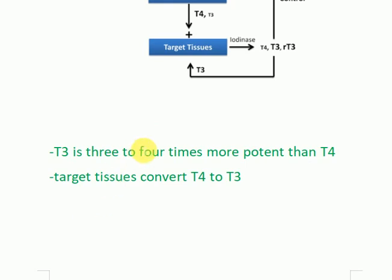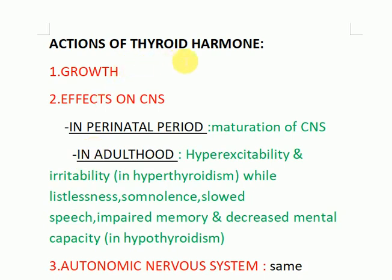T3 is three to four times more potent than T4, and in target tissues T4 is converted to T3. The actions of thyroid hormones affect almost all systems of the body. Very importantly, thyroid hormone has a role in growth — it acts synergistically with growth hormone and somatomedins to promote bone formation.